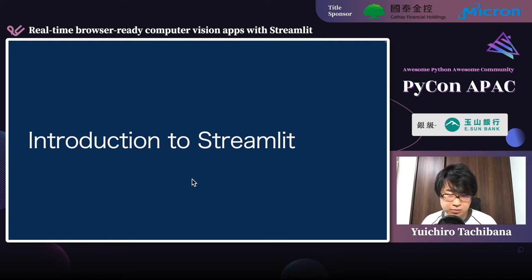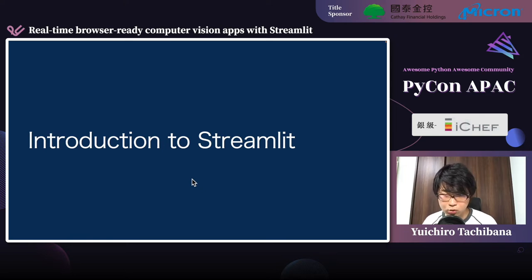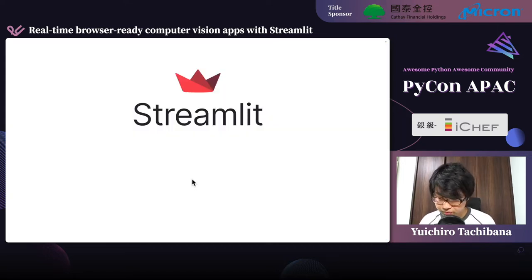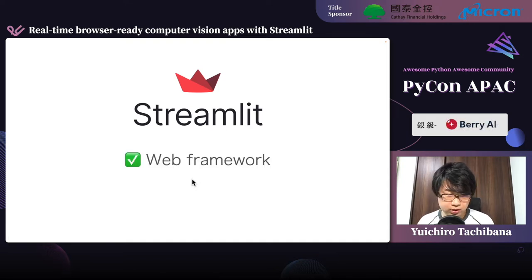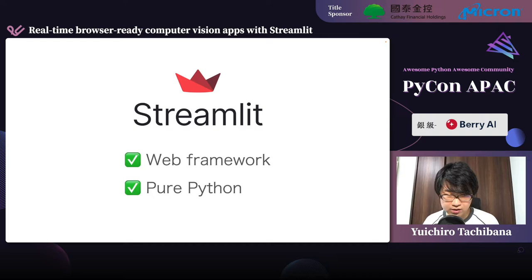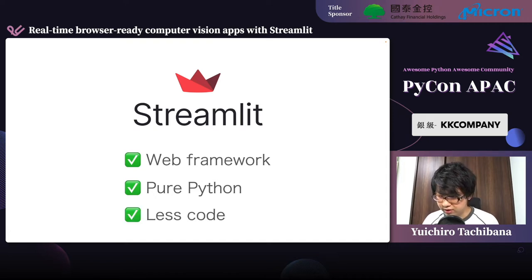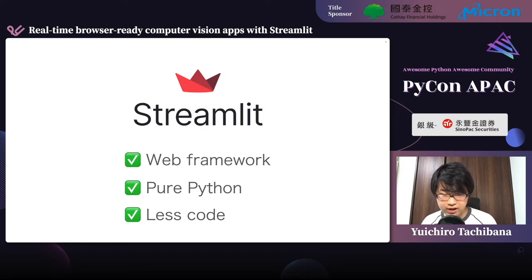I have been explaining why this new approach to create web applications is preferable. Now I would like to explain how we can create such applications and how easy it is. First, let me introduce Streamlit. Streamlit is a Python web framework, and its unique characteristic is that developers can create web applications just by writing only Python code. It does not require any front-end coding. It also provides various predefined ready-to-use UI widgets and components, and there are also third-party components that developers can use as building blocks to construct rich web applications with a small amount of code.